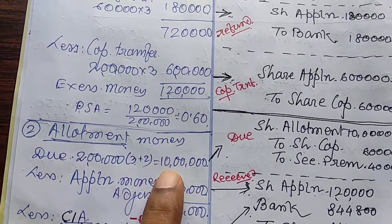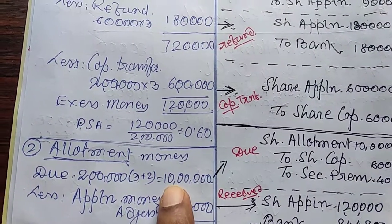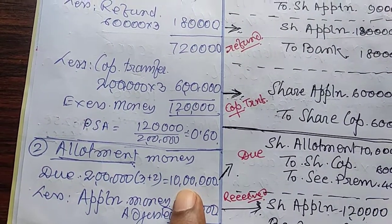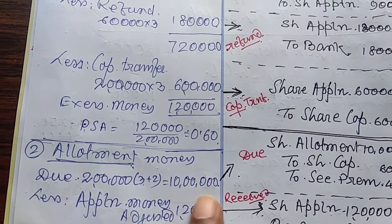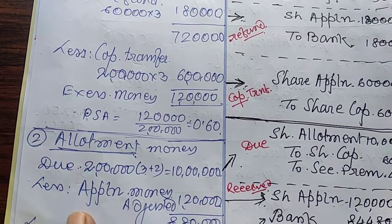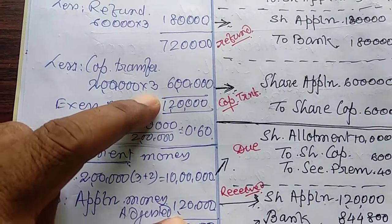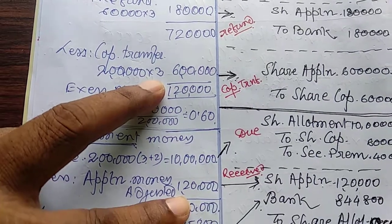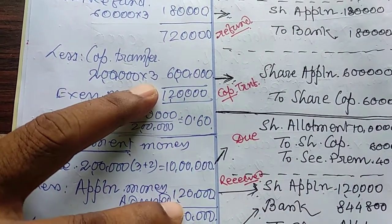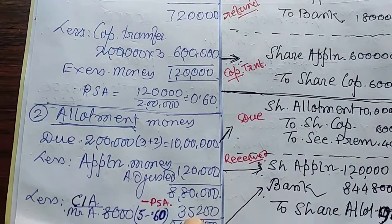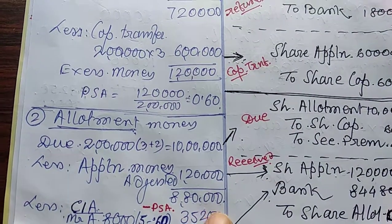In share allotment, the amount due is Rs. 5 per share, so for 2 lakh shares it is Rs. 10 lakh. Application money adjusted from application account is Rs. 1,20,000, so the actual amount due from allotment is Rs. 8,80,000.